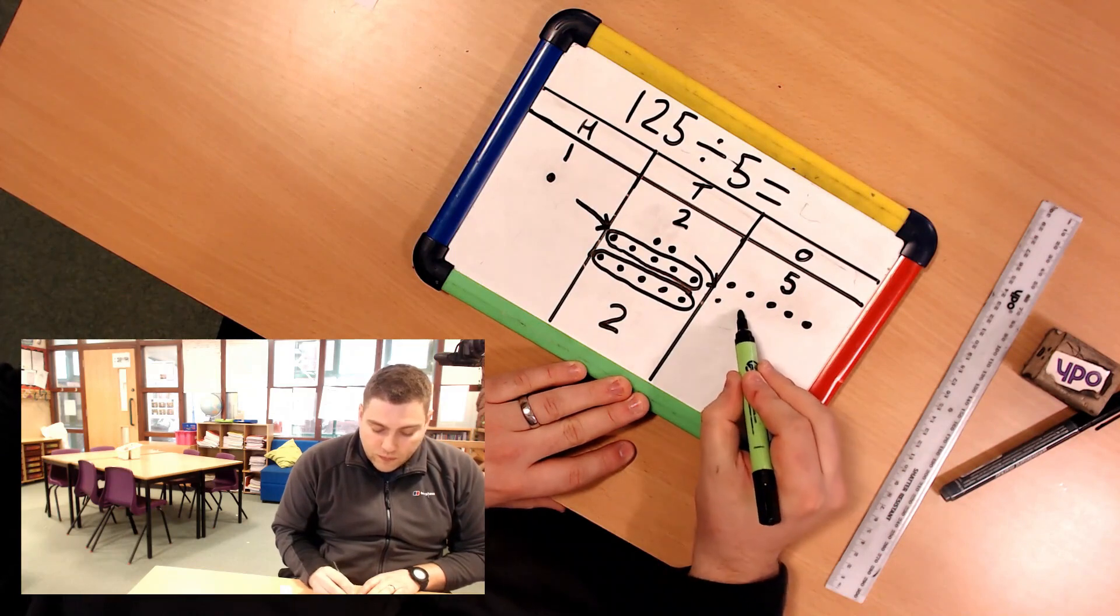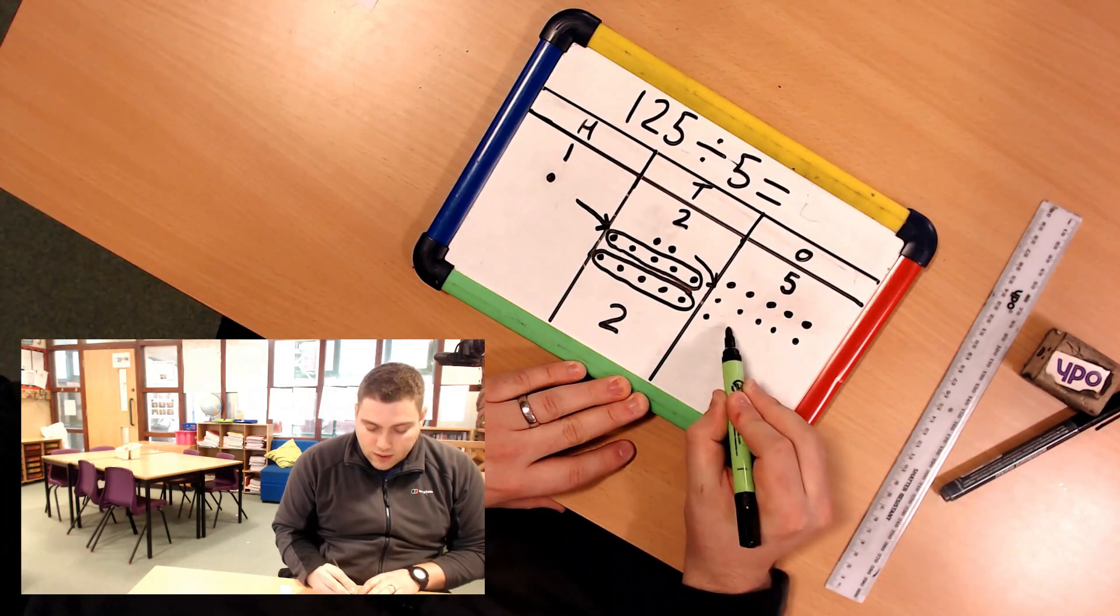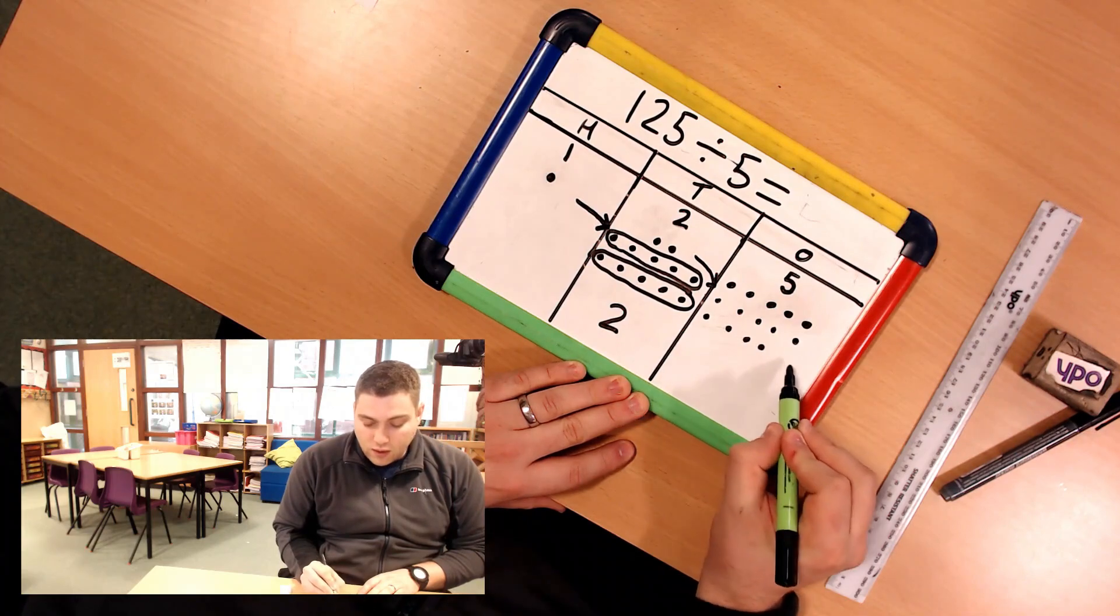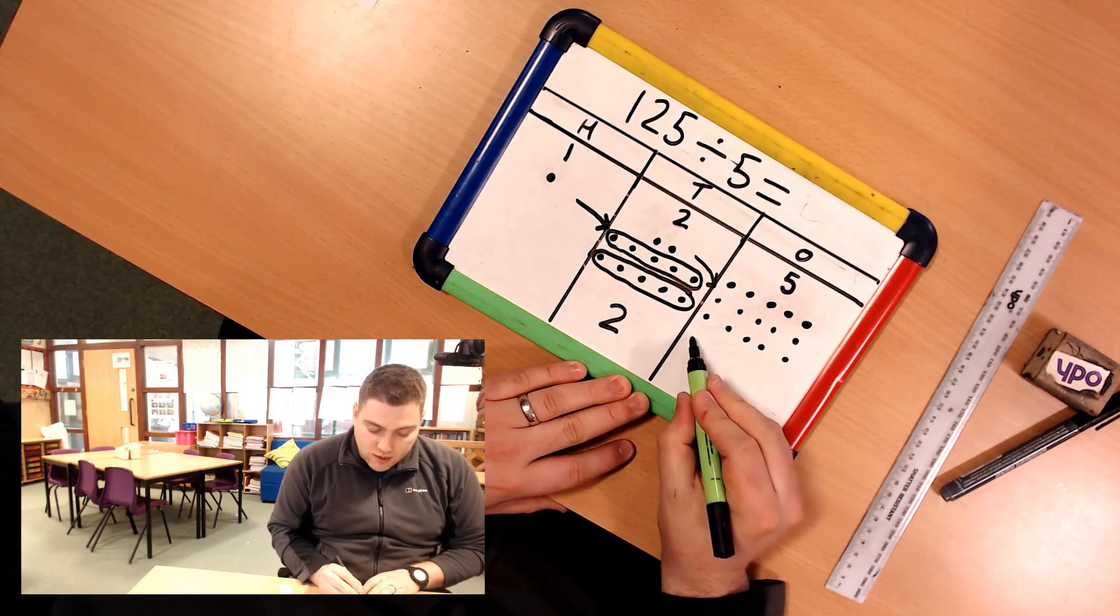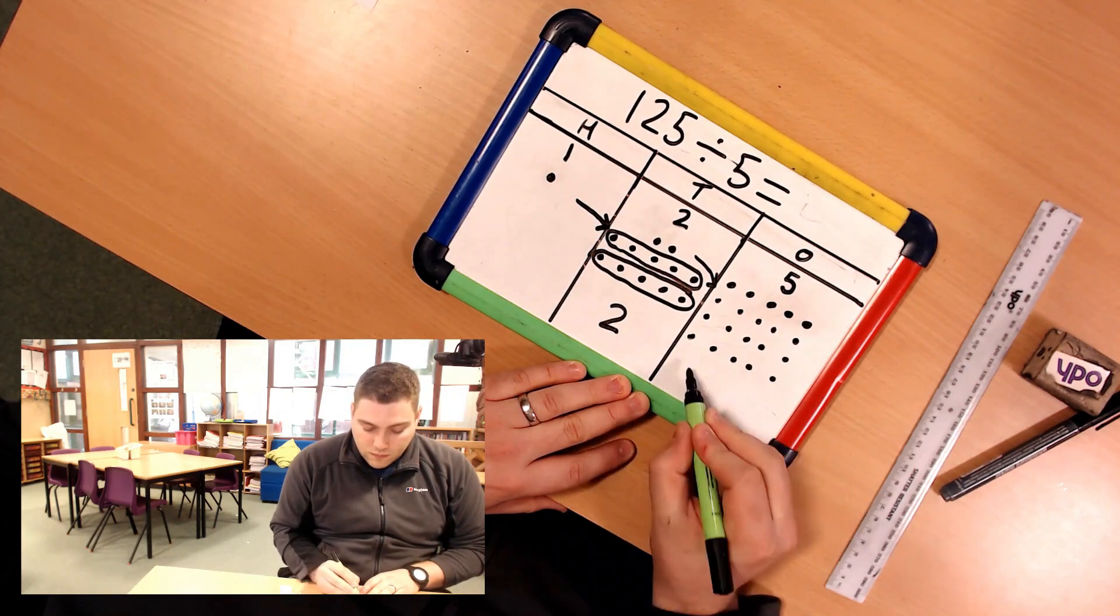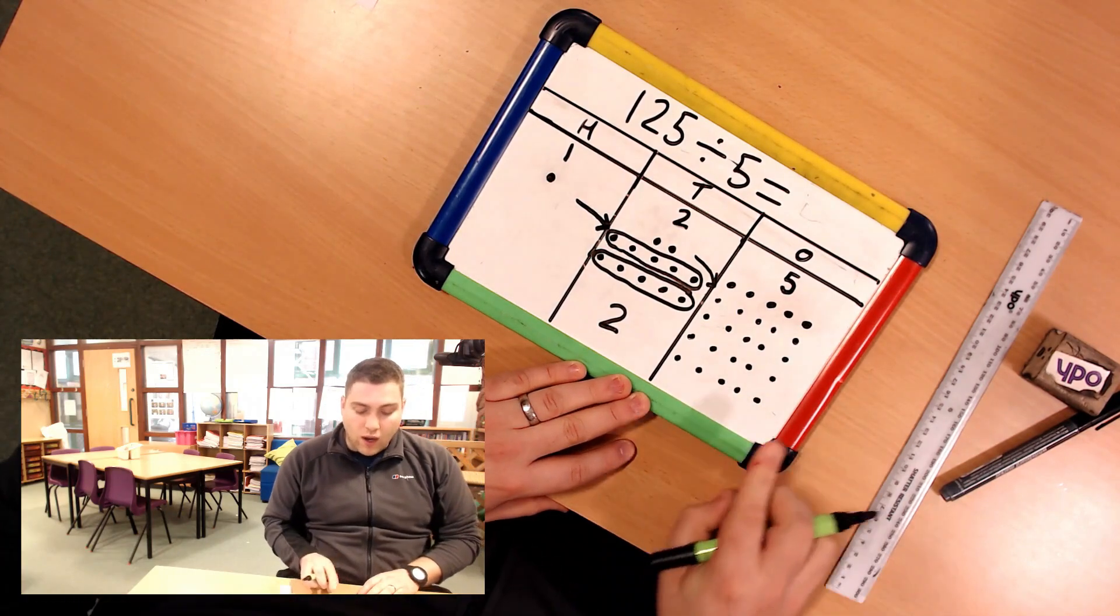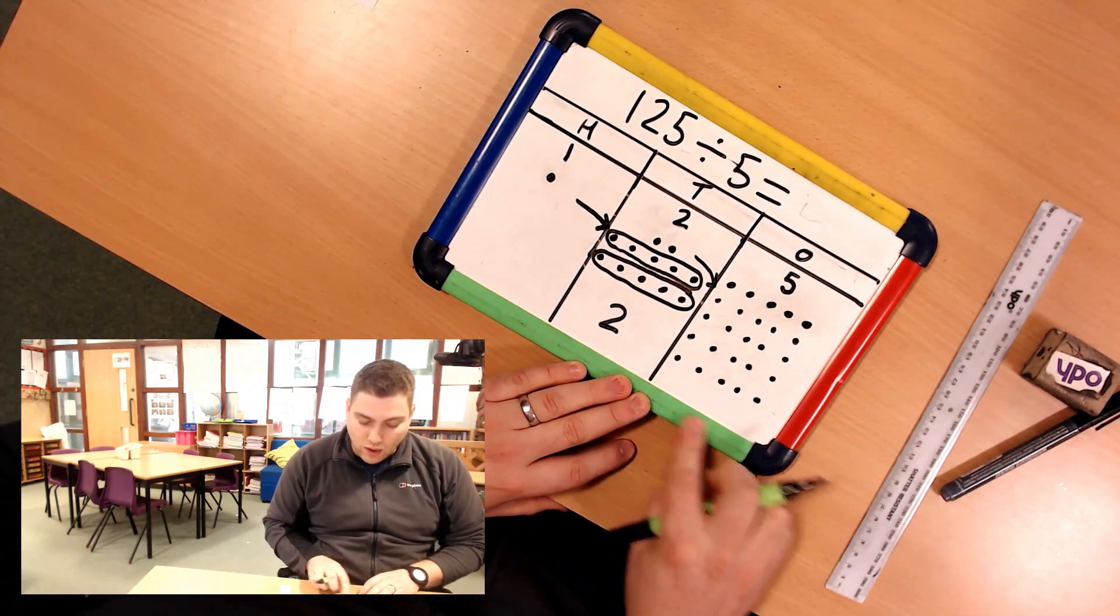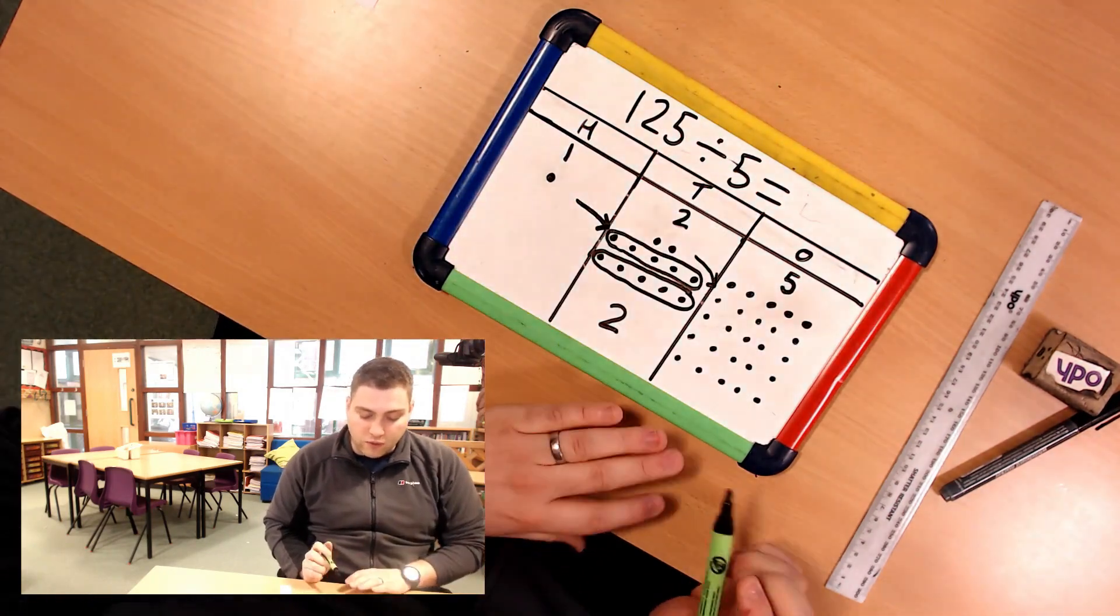So I have 1, 2, 3, 4, 5, 6, 7, 8, 9, 10. There is my first 10, now I need to use it for my second 10. So now I have 25 dots in my 1s column. Which means I've got my two 10s and my 5 1s.